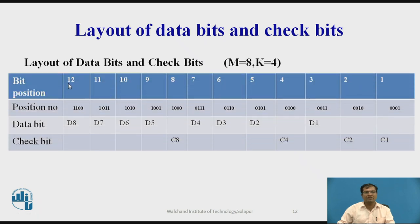Now let us consider layout of data bits and check bits. Total m 8 plus k 4 equals total 12, bit position 1 to 12. This is represented in binary. And third row indicates data bit: data bit d1, d2, d3, d4, d5, d6, d7, d8. And check bits: 4 check bits c1, c2, c4 and c8. So like this total 12 bits.